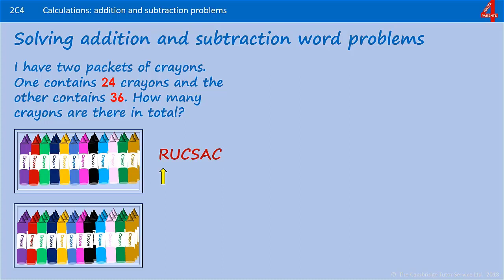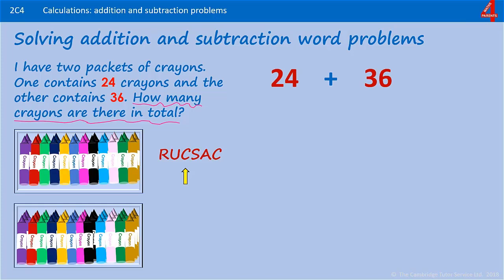Read the question. I have two packets of crayons. One contains 24 crayons and the other contains 36. How many crayons are there in total? Understand what this question is asking you to do. How many crayons are there in total? We need to choose the operation and the numbers we are going to use. How many in total indicates that we are adding. The numbers we are adding are 24 and 36.